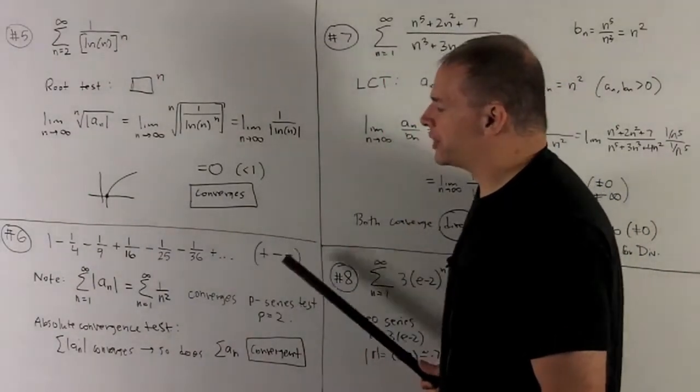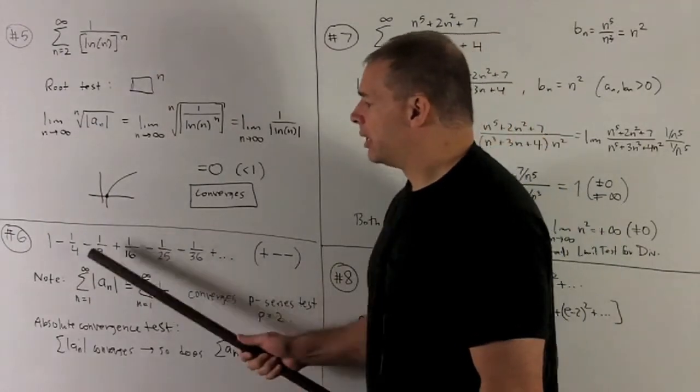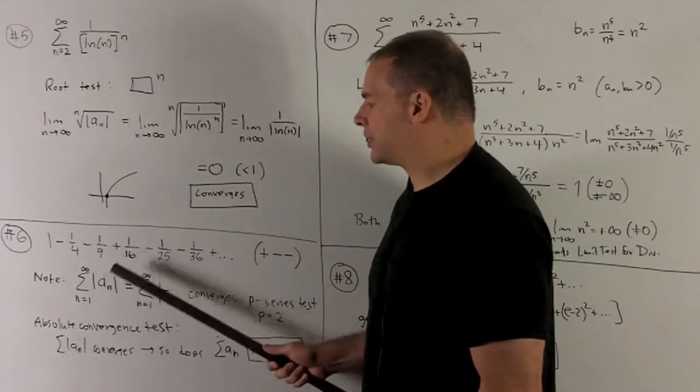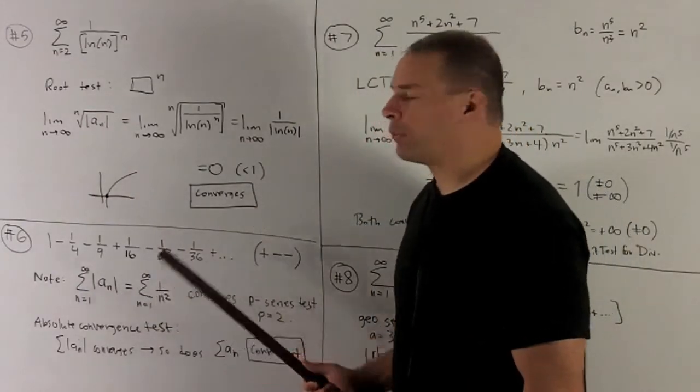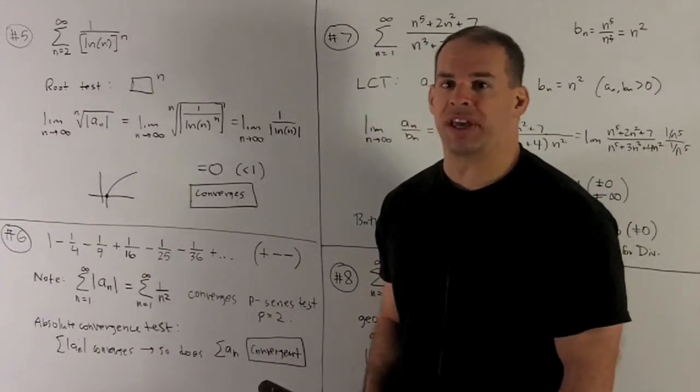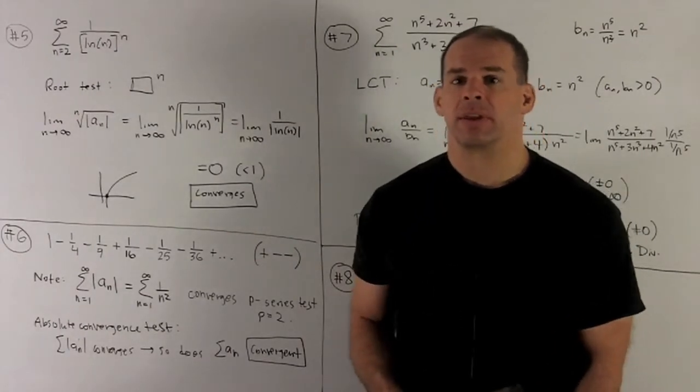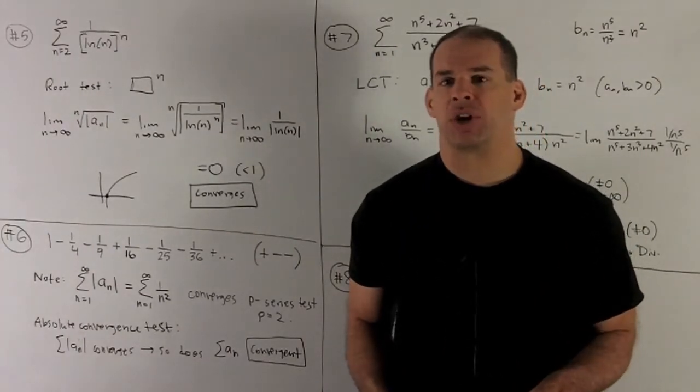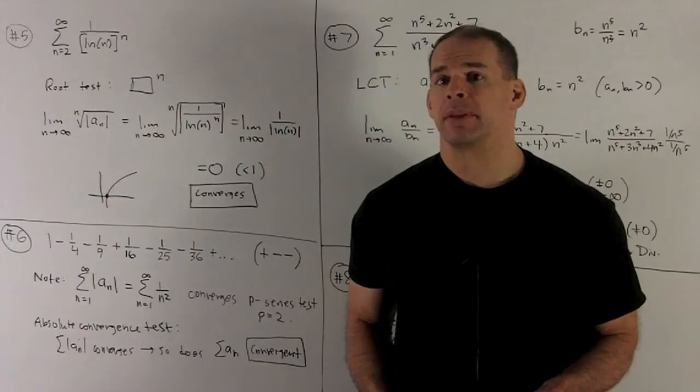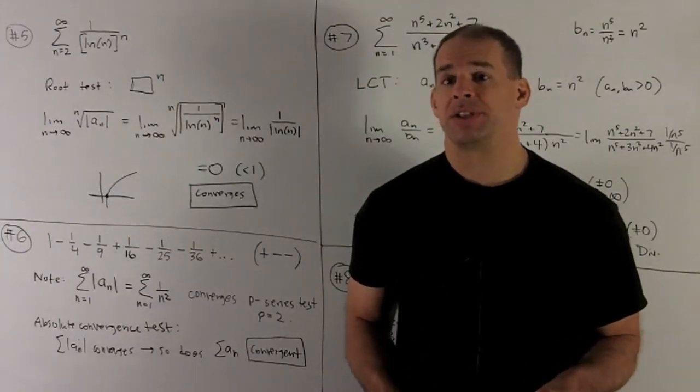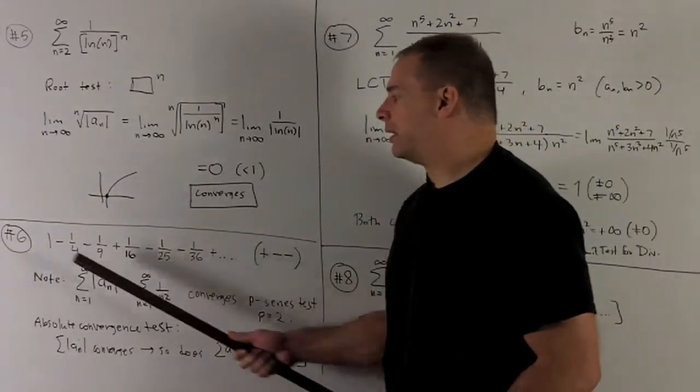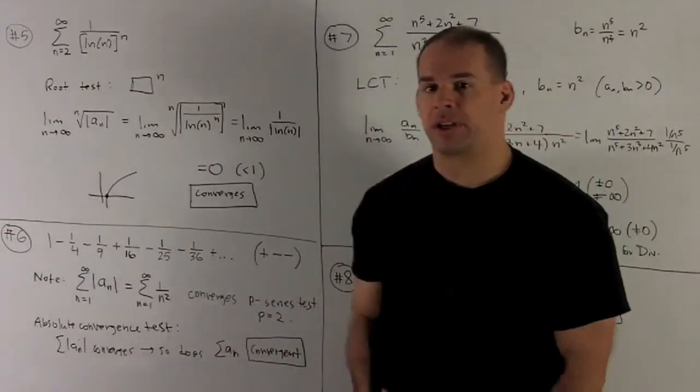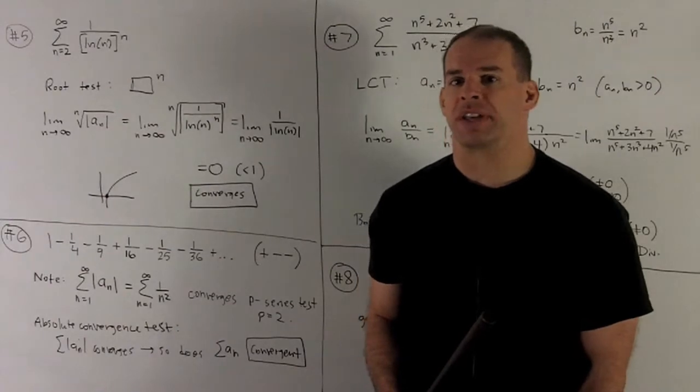What we've just done is set up the series for the absolute value of a sub n. That's what throwing away the signs does. So this is the condition for the absolute convergence test. If I have a series, if I take the absolute value of each term, take the series for that, the absolute value series converges, then the original series had to converge. So that's going to mean this series here is going to converge by the absolute convergence test.